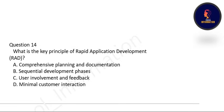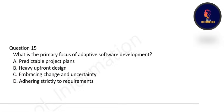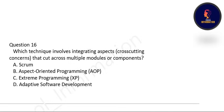Next: what is the key principle of Rapid Application Development? The key principle of RAD is user involvement and feedback. Next: what is the primary focus of Adaptive Software Development? The primary focus is embracing changes and uncertainty — option C is correct. Next: which technique involves integrating cross-cutting concerns that cut across multiple modules or components? Correct option is B — Aspect-Oriented Programming, AOP.